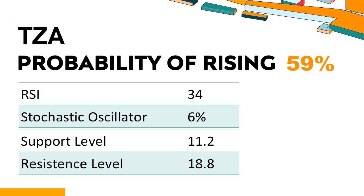TZA's short-term resistance level is 17. If it breaks through 17 during the session, it will look up to 18.8.